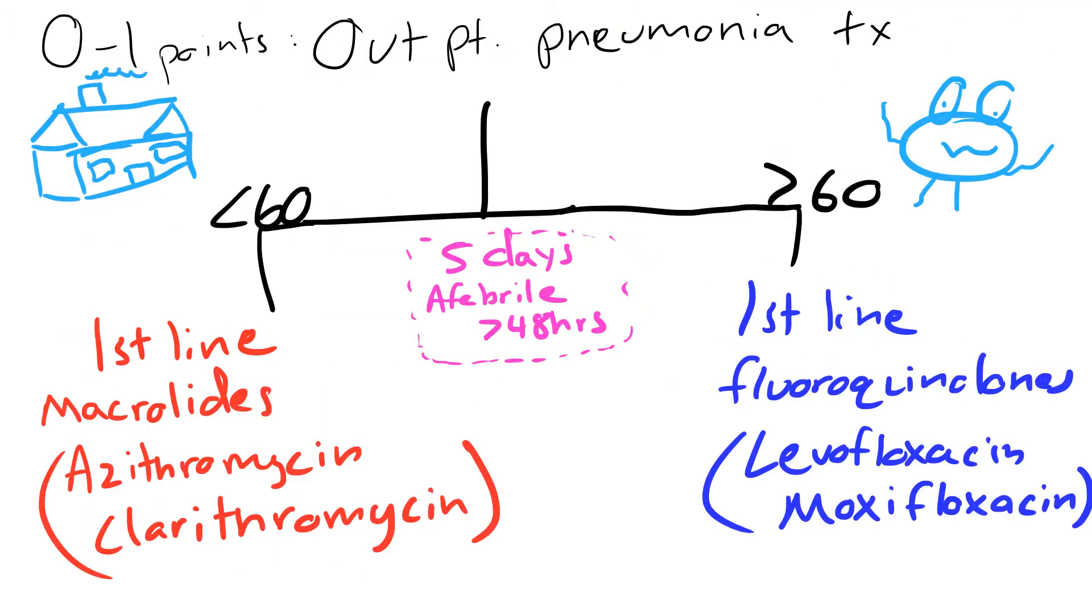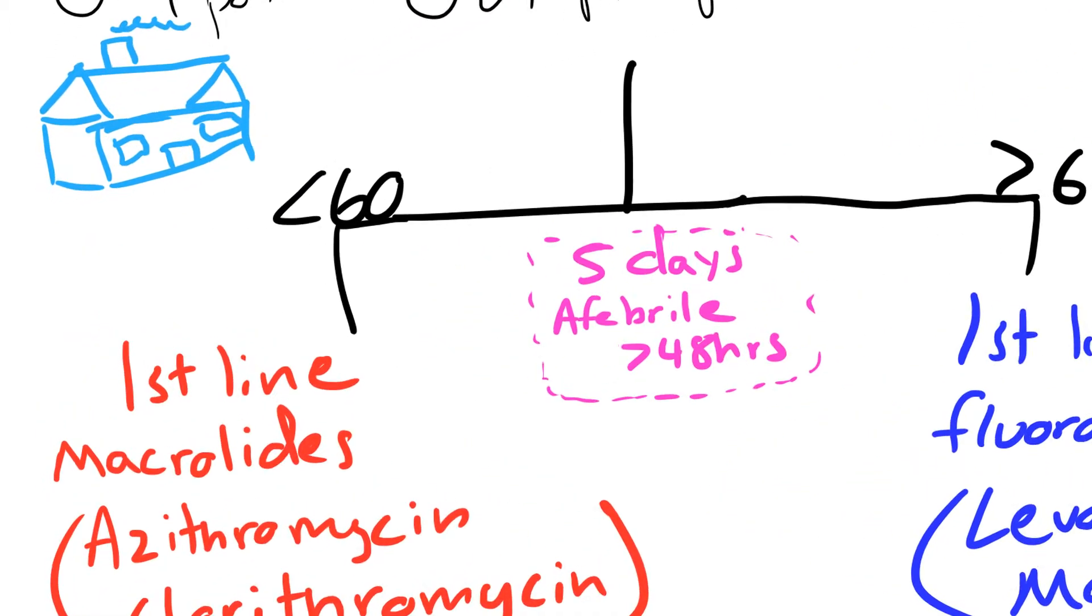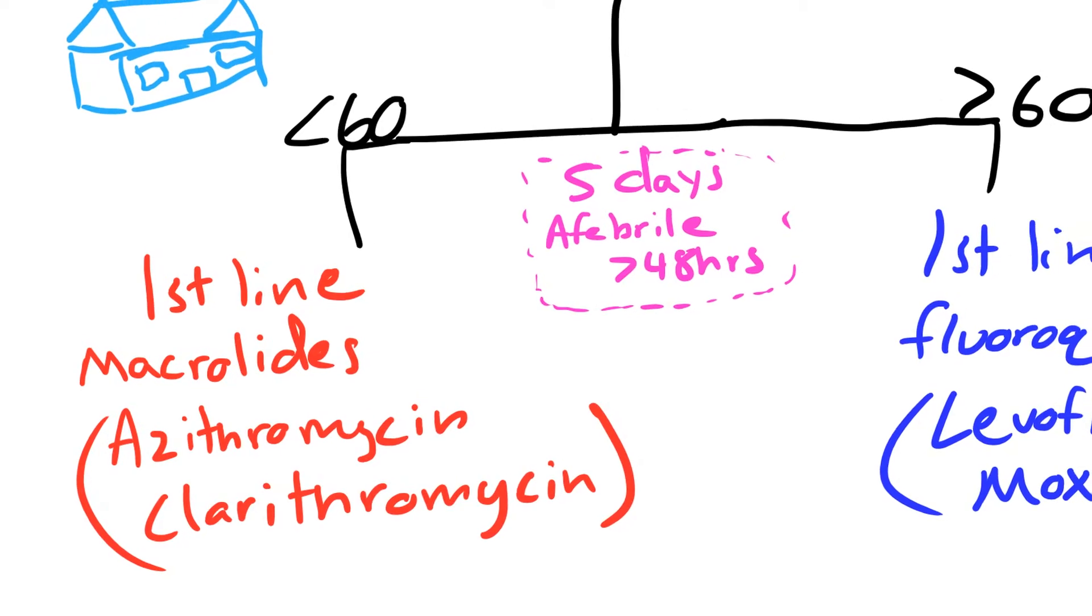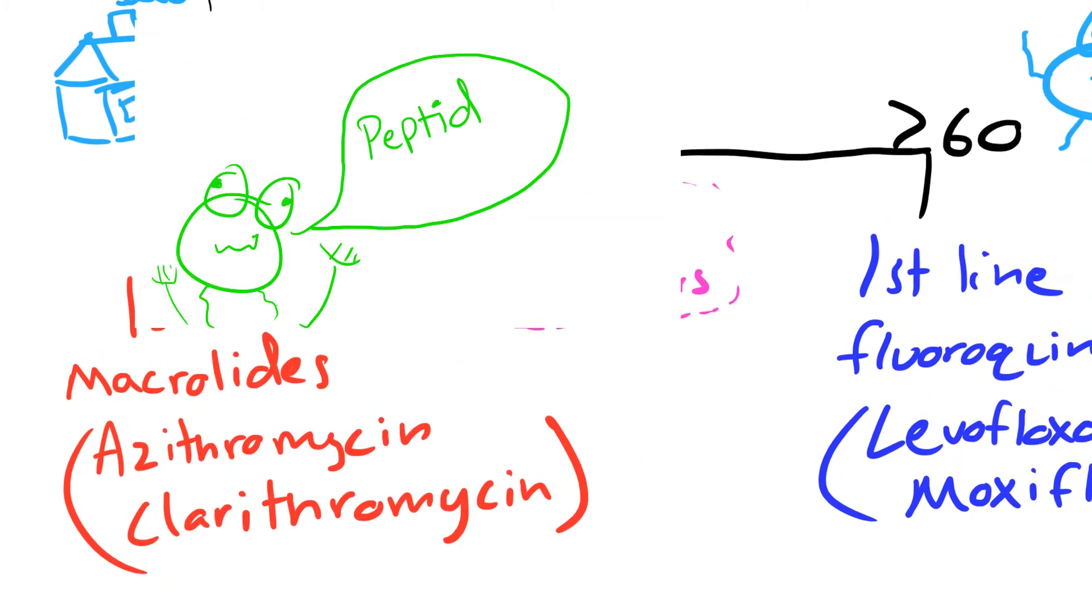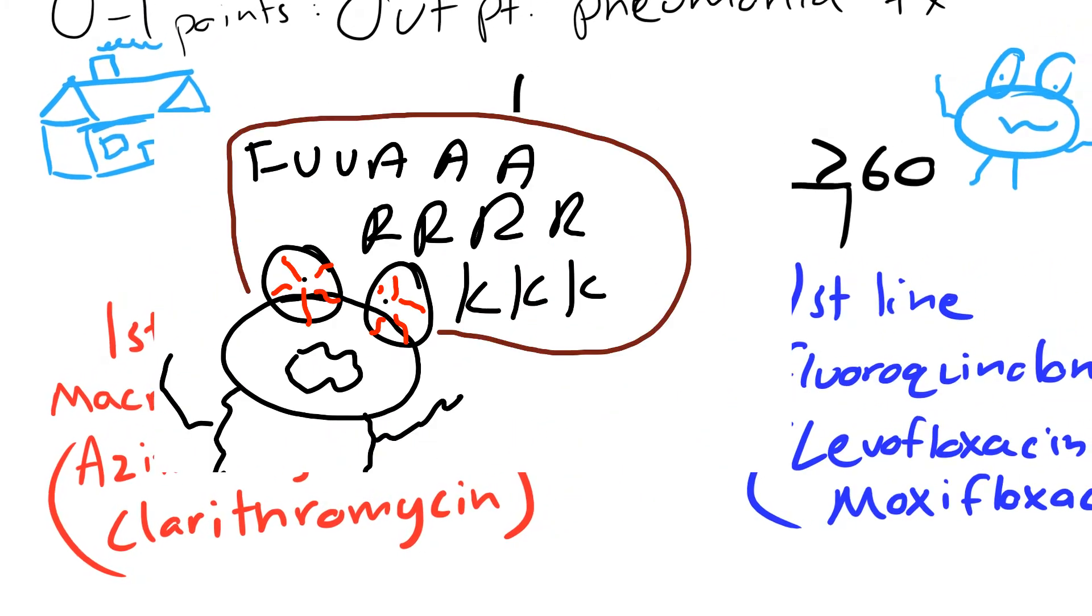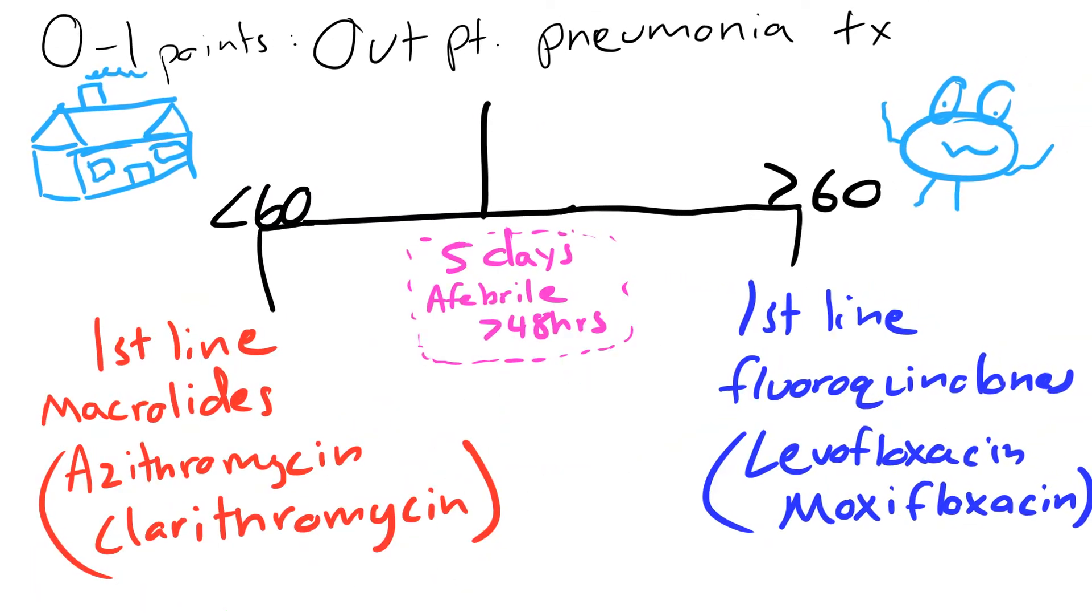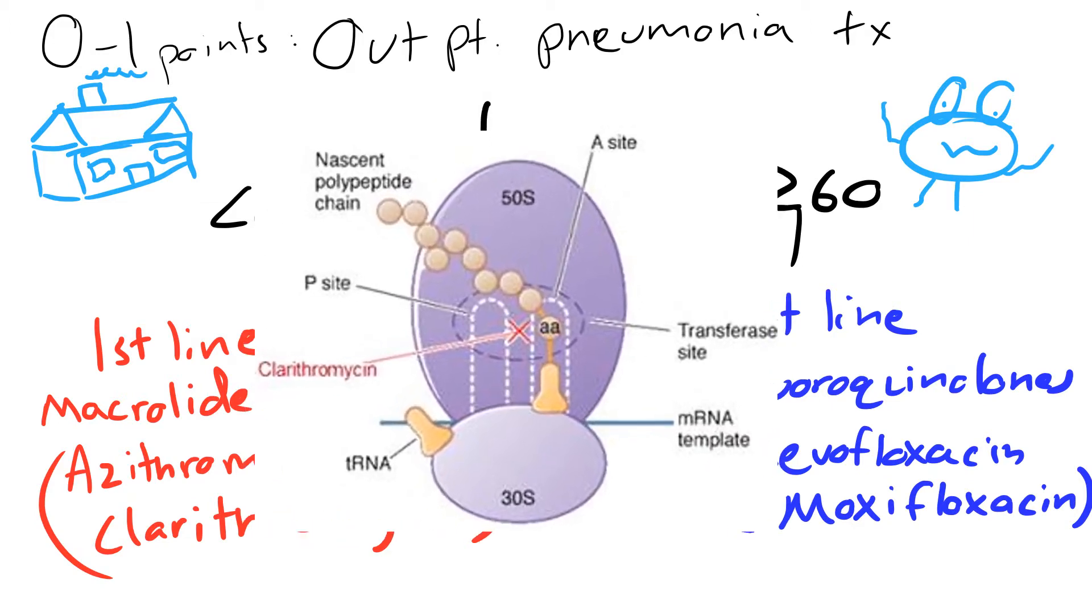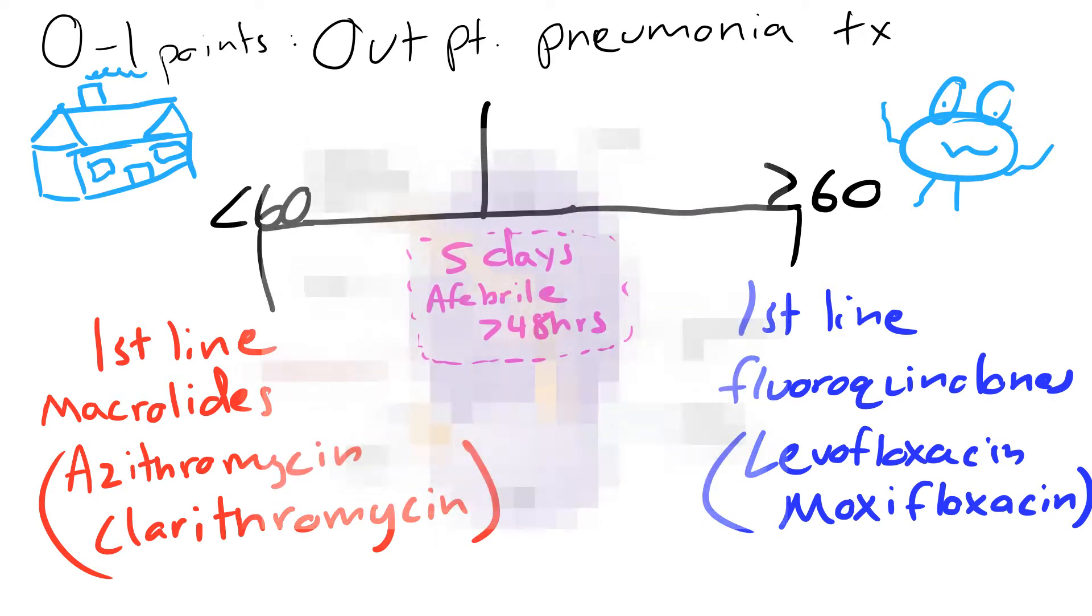So the treatment option outpatient is age dependent. So if they're less than 60, the first line outpatient therapy are macrolides like azithromycin or clarithromycin. They work by inhibiting protein synthesis by reversibly binding to the 50S ribosomal subunit and inhibiting transpeptidation and translocation. So basically the peptide chain can't grow longer and the bacteria can't make proteins. So yeah, the bacteria is going to die. And it's considered a bacteriostatic drug.